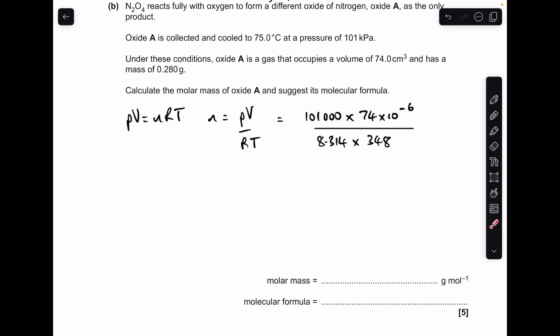Gas constant, obviously, is on your datasheet. And the temperature, we can't use degrees C. We've got to put it into Kelvin. So we add 273 under that. And it goes to 348.